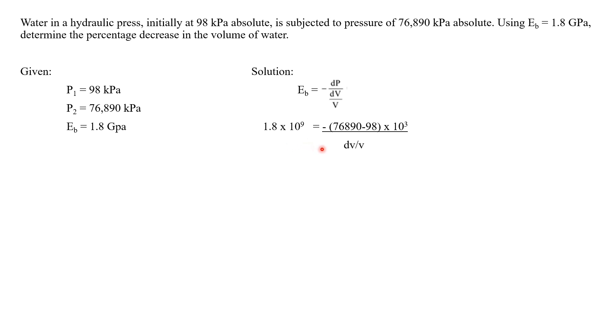This equals negative (76,890 minus 98) times 10 raised to 3 over DV/V. 10 raised to 3 converts kilopascal to pascal.